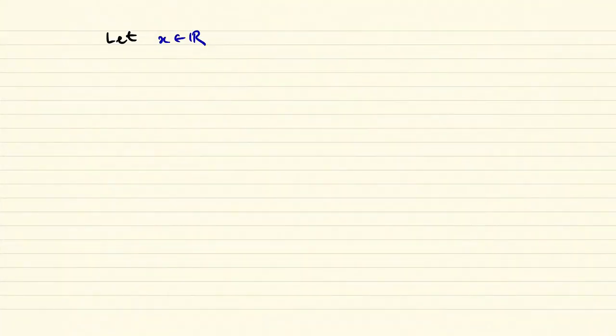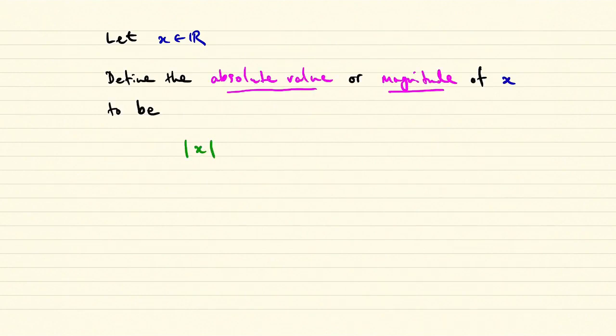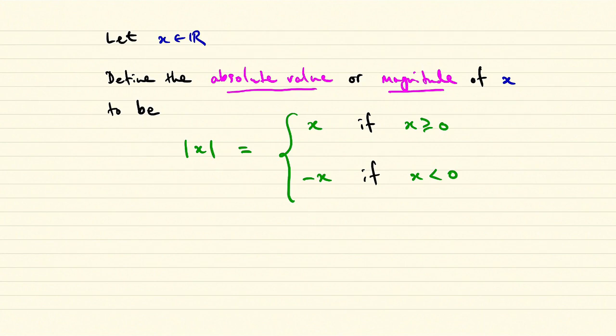Absolute value or magnitude captures precisely the notion of distance along the real line. Let x be a real number. Define the absolute value or magnitude of x to be the symbolism with x inside two vertical lines, and that's equal to x if x is greater than or equal to zero, or minus x if x is less than zero. And this is just the distance between x and zero on the real line.